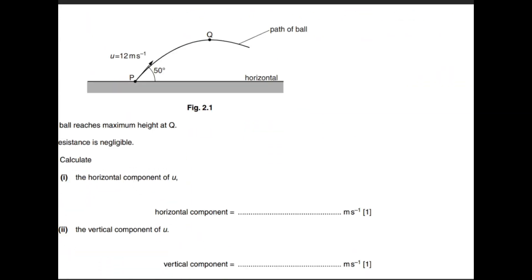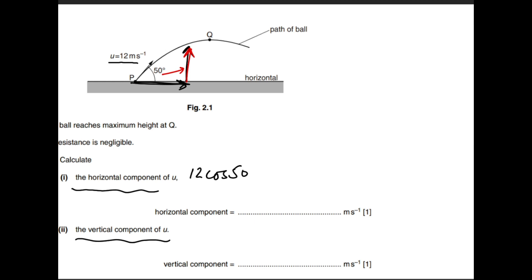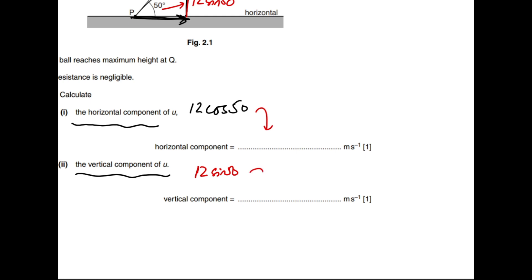In this P2 question, we must find the horizontal and vertical components of velocity u. We are given the resultant (hypotenuse). The horizontal x-axis component is 12 cos 50, and the vertical component — which is in front of the angle — is 12 sin 50. Substituting calculated values makes the rest of the question straightforward once the components are identified.